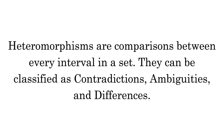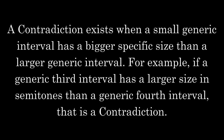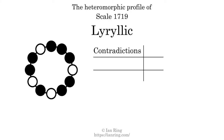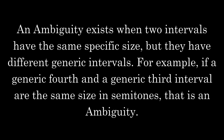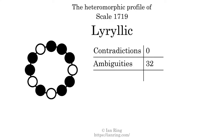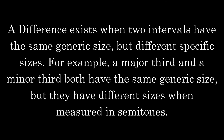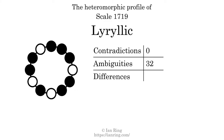Heteromorphisms are comparisons between every interval in a set. They can be classified as contradictions, ambiguities, and differences. A contradiction exists when a small generic interval has a bigger specific size than a larger generic interval — for example, if a generic third interval has a larger size in semitones than a generic fourth interval. The number of contradictions in this scale is zero. An ambiguity exists when two intervals have the same specific size but different generic intervals. The number of ambiguities in this scale is 32. A difference exists when two intervals have the same generic size but different specific sizes — for example, a major third and a minor third. The number of differences in this scale is 110.